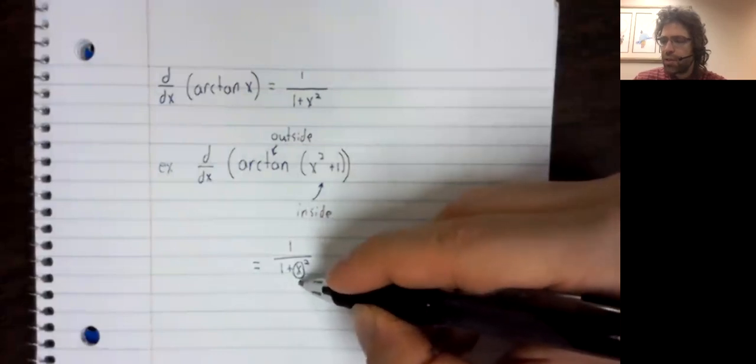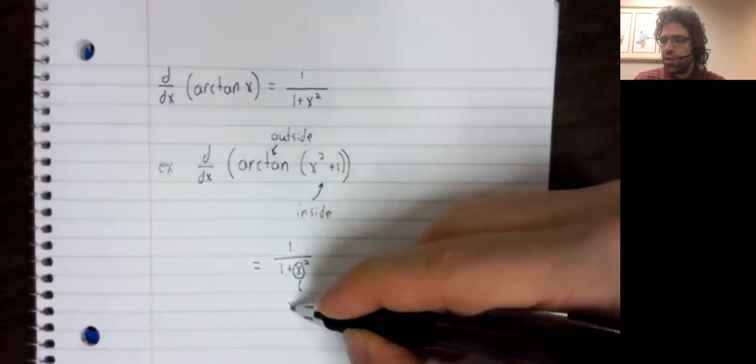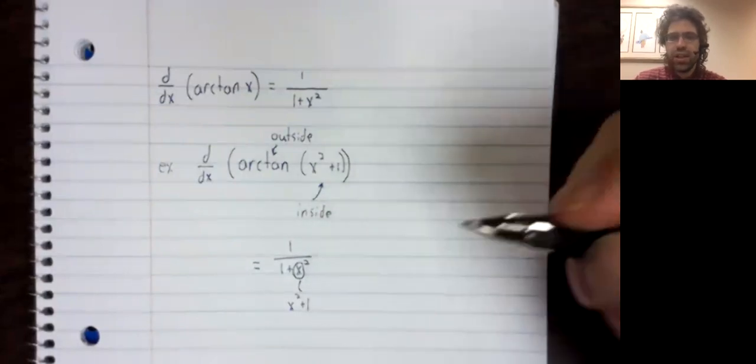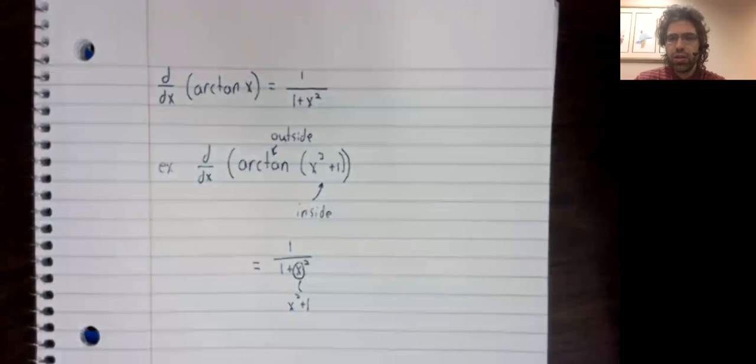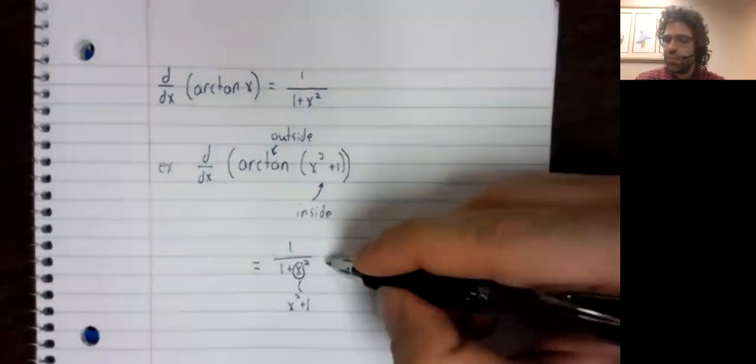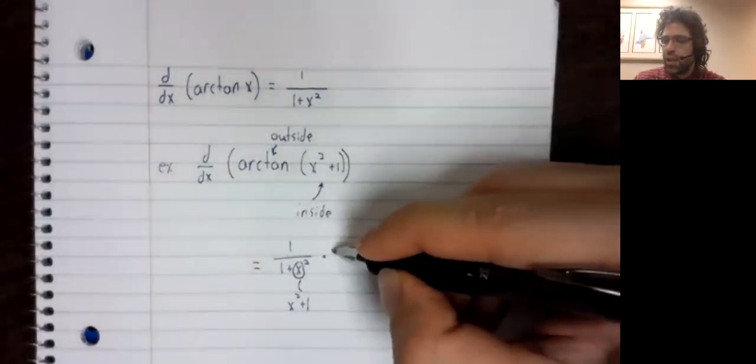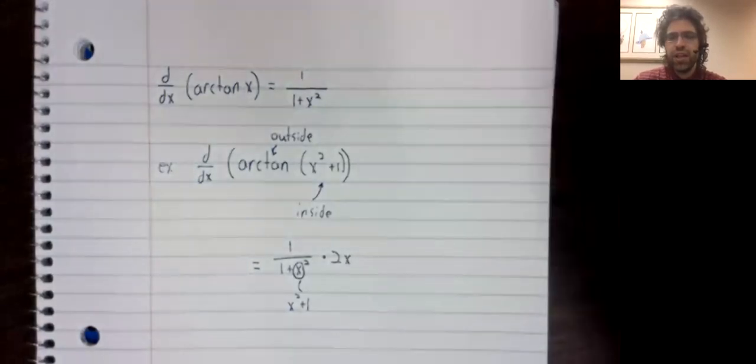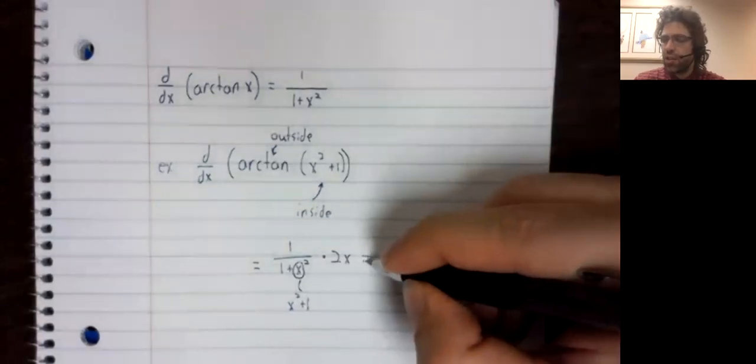But where x appears, you stick in the inside function, and then multiply by the derivative of the inside function.